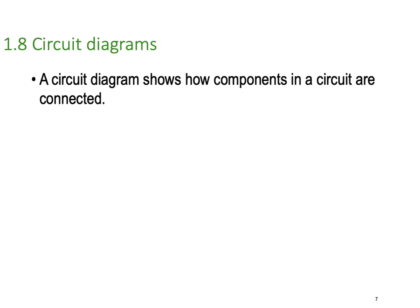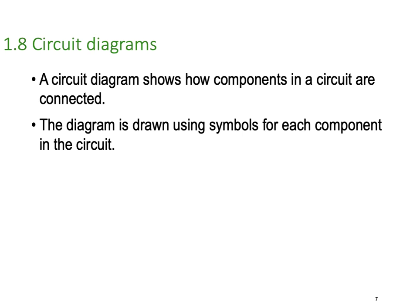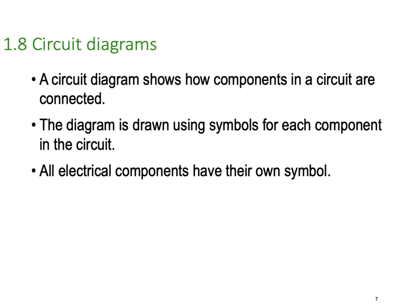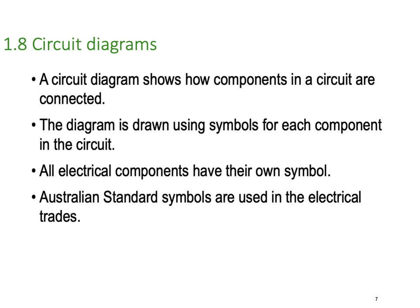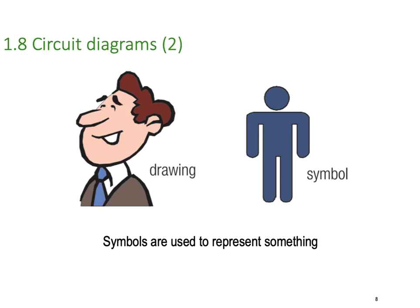A circuit diagram shows how components in a circuit are connected, drawn using symbols for each component. All electrical components have their own symbol, which are actually visible metaphors for what they do. Australian standard symbols are used for our electrical trades. A symbol is not an exact representation — a symbol is a visual metaphor.